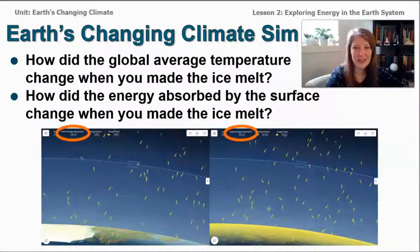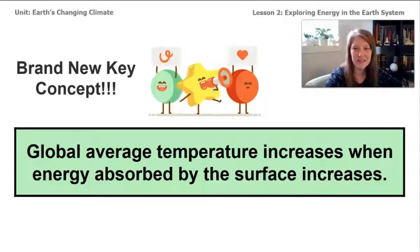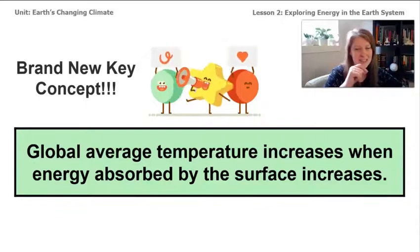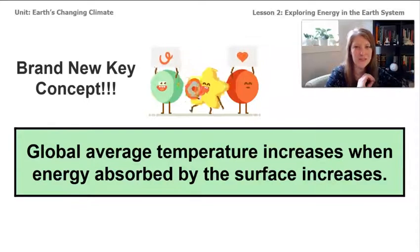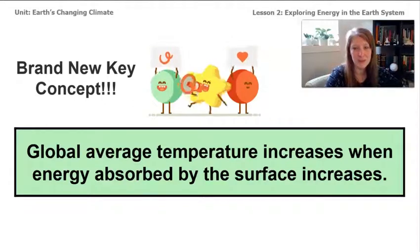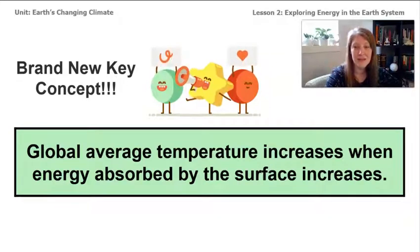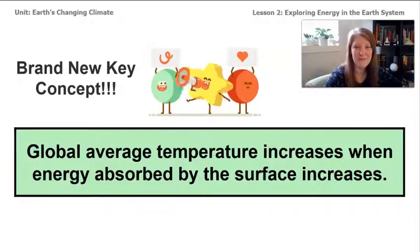From the sim exploration, we've discovered a new key concept for this unit: the global average temperature increases when energy absorbed by the surface increases. In our next lesson, we're going to dig deeper into the sim and explore the question: what kinds of changes to the atmosphere could affect how much energy is absorbed by Earth's surface? You might already have some ideas from your exploration. We'll be exploring each type of gas one at a time. See you next time.